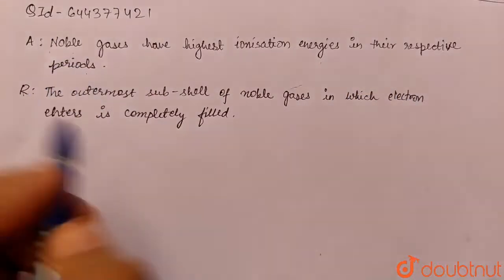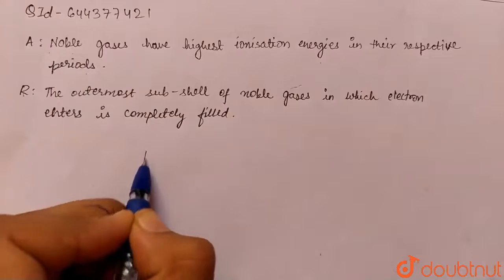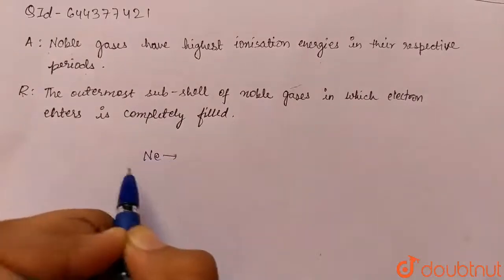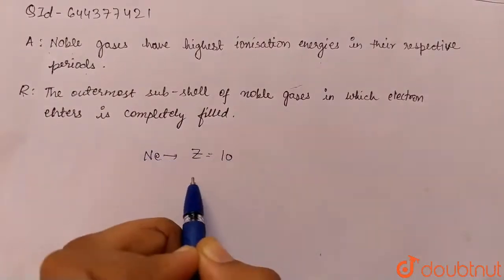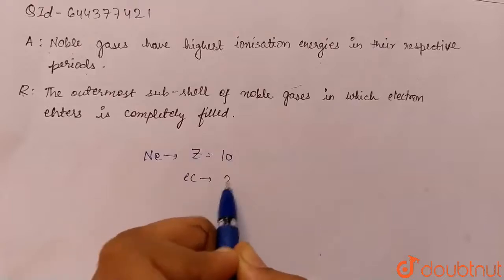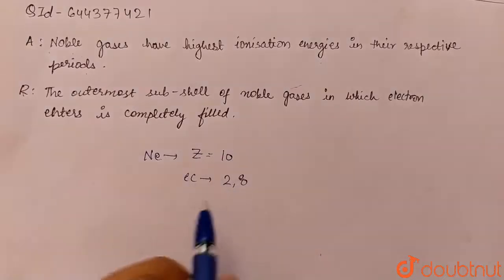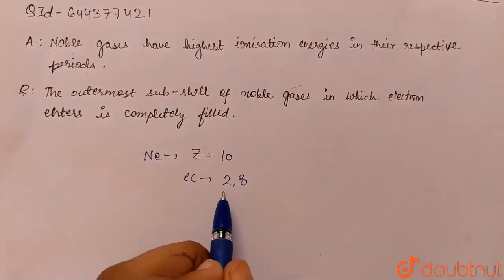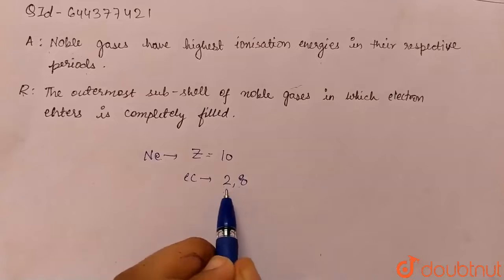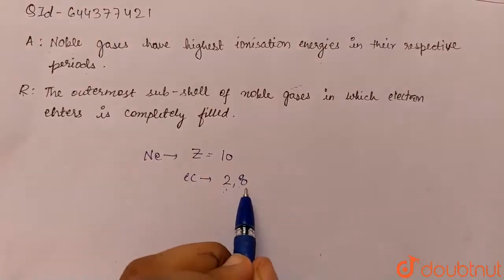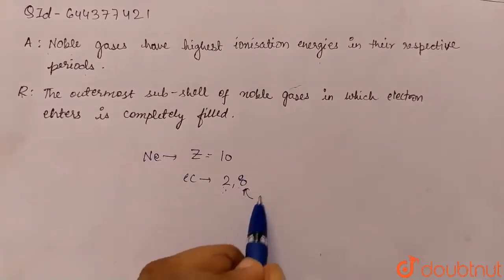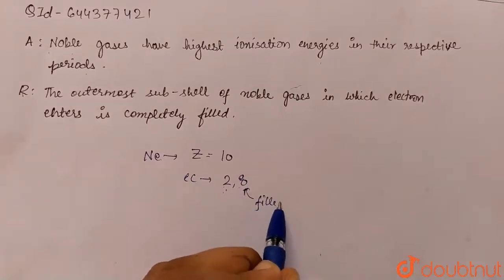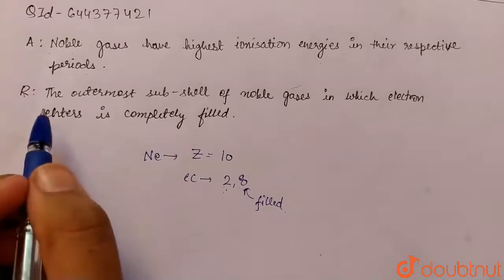Let's take the example of a noble gas — neon. The atomic number of neon is 10 and its electronic configuration is 2, 8. Since it has this electronic configuration, the valence subshell is completely filled with 8 electrons.